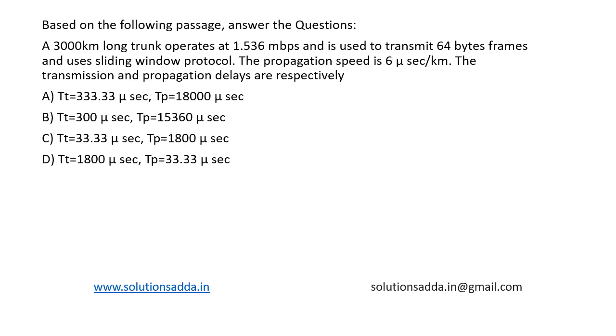This is a question from computer networks. Based on the following passage, answer the questions. This is the first question among a set of five questions which are linked. The question is: a 3000 kilometer long trunk operates at 1.536 megabits per second and is used to transmit 64 byte frames and uses sliding window protocol. The propagation speed is 6 microseconds per kilometer. The transmission and propagation delays are respectively what?